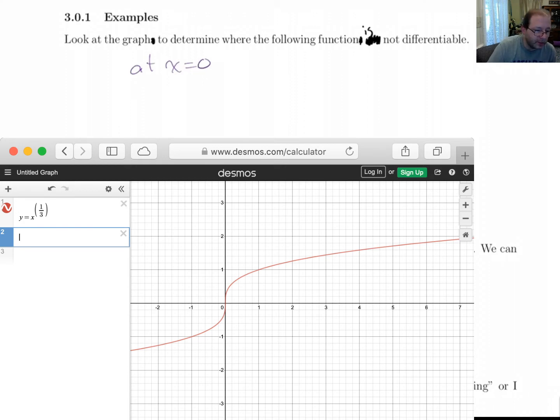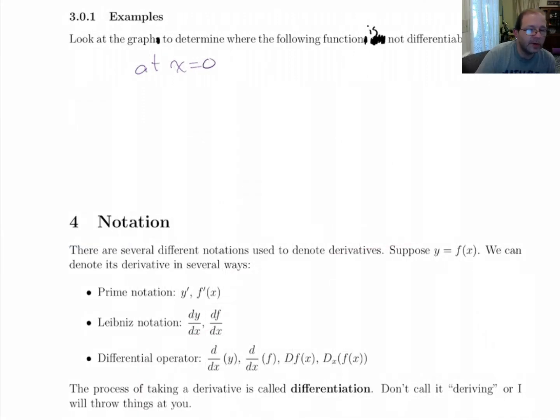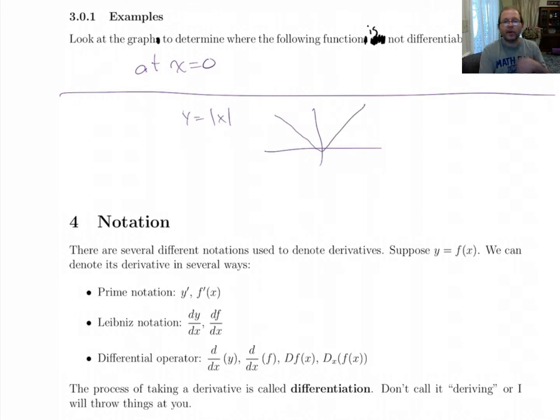Another example we saw in the previous video is if you have a graph with a sharp corner, like y equals absolute value of x. The derivative is not defined at zero because you have that sharp corner.